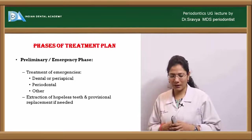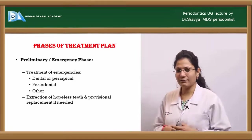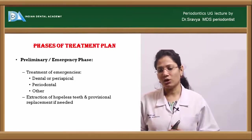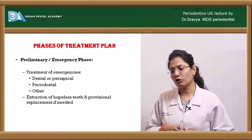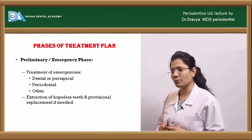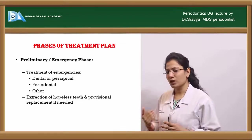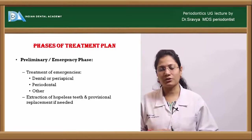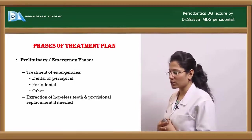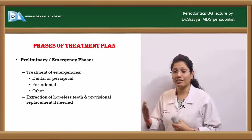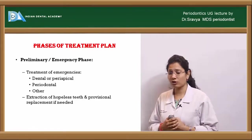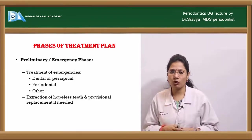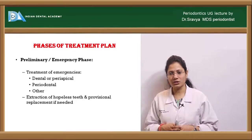What are the phases of the treatment plan? There are five phases. Before phase one, there is the preliminary or emergency phase, followed by phase one therapy — the preparatory phase. Then phase two is the surgical phase, phase three is the restorative phase, and phase four is the maintenance phase.